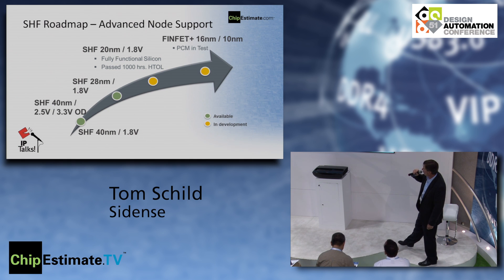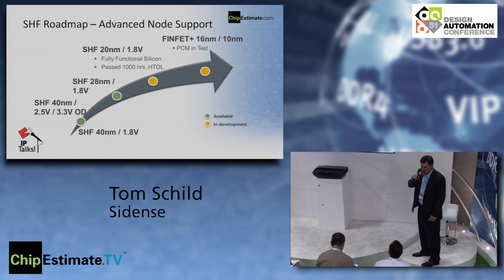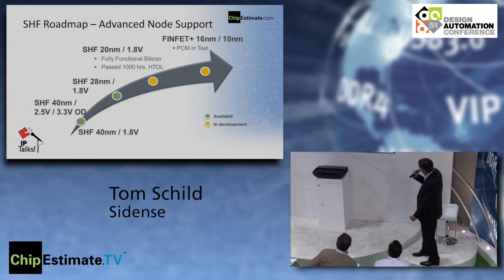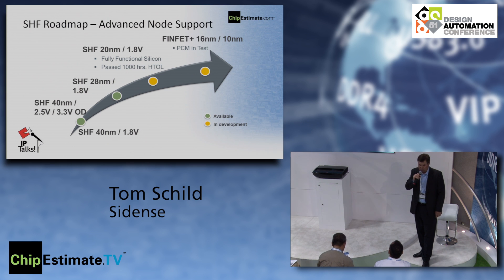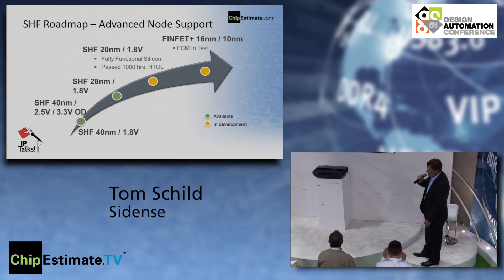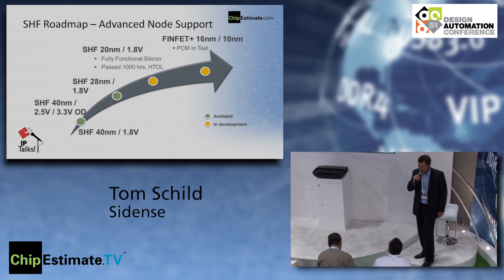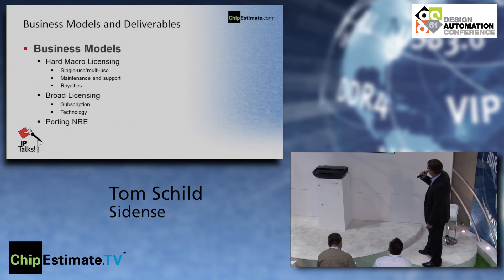Our roadmap shows SHF covering 40 nanometers through FinFET designs. 40 nanometer and 28 nanometer are fully qualified at TSMC through TSMC 9000 — their three-lot qual including HTOL and HTS — fully compatible with JEDEC standards. Our 20 nanometer products have fully functional silicon and have passed 1,000 hours of qualification testing. Next is 16 nanometer FinFET: test structures are in-house and testing is just beginning. The antifuse one-transistor bit cell truly allows scaling in lockstep with the most advanced process nodes.